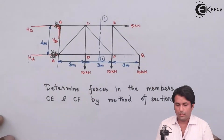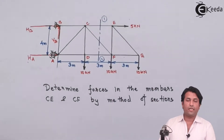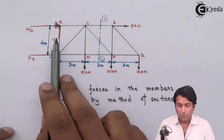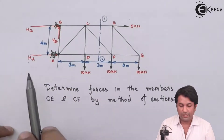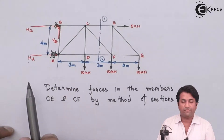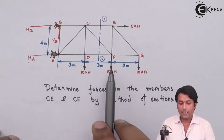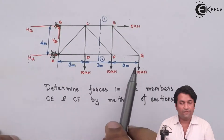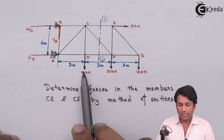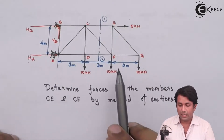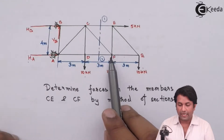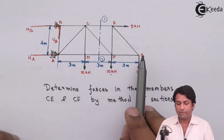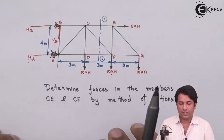Now we will look at the vertical reactions. I have only one vertical reaction at B, that is VB, but I have three vertical forces: a 10 kN force acting at D, another 10 kN force acting at F, and one more at G.